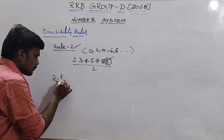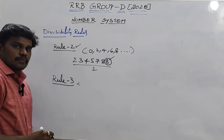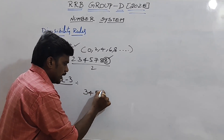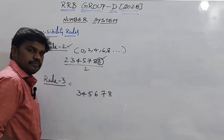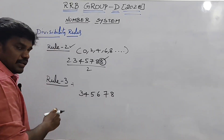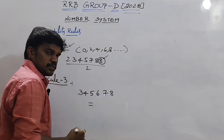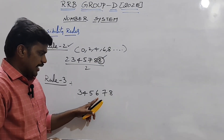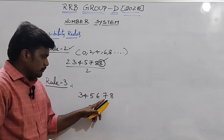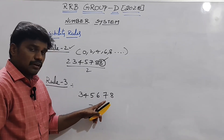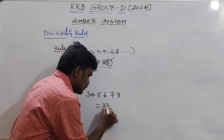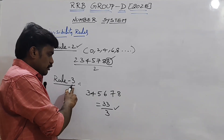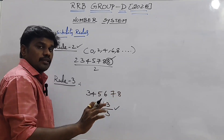Rule number 3: Take the number 345,678. In rule number 3, you add all the digits. 3 plus 4 is 7, plus 5 is 12, plus 6 is 18, plus 7 is 25, plus 8 is 33. So 33 is divisible by 3, which means this entire number is also divisible by 3.